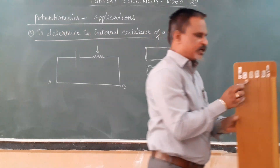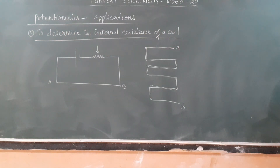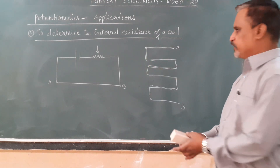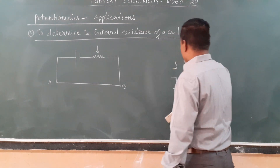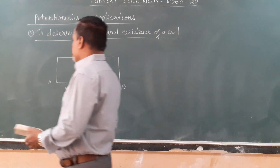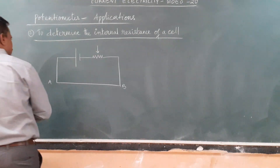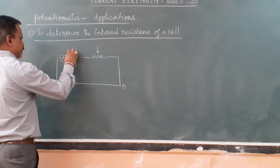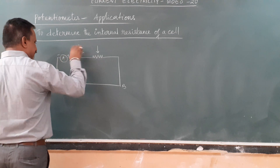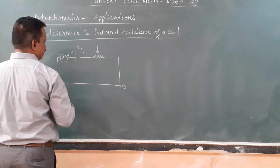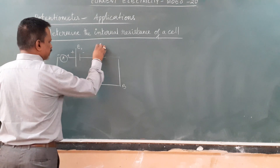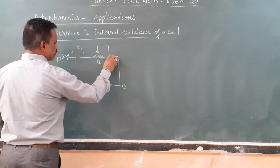You can easily understand the length of the potentiometer even if it is drawn simply — there is no issue. This primary circuit portion is common in all circuits. You can have an ammeter, battery E1, and rheostat RH. This is the connection to the rheostat.